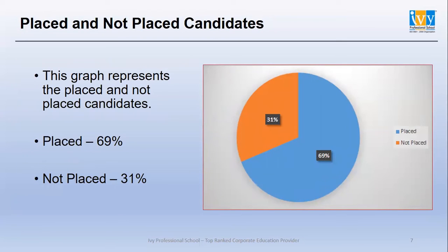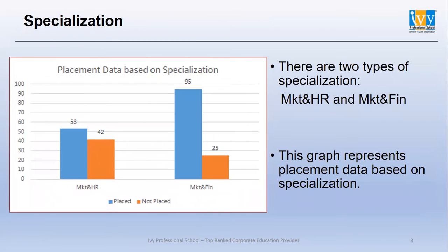As we ran the query and got the numbers, I converted them into percentages and showed it in a pie chart. This graph represents placed and not placed candidates: Placed — 69%, Not Placed — 31%. For specialization, there are two types: Marketing and HR, and Marketing and Finance. This graph represents placement data based on specialization.